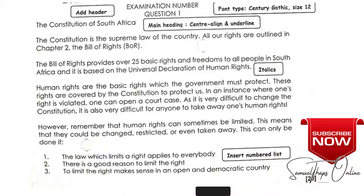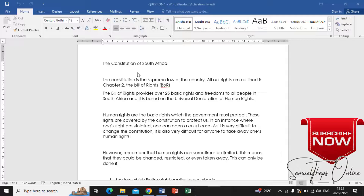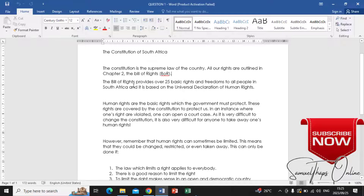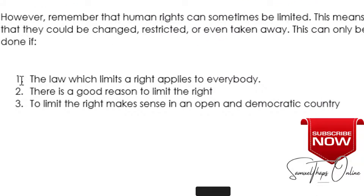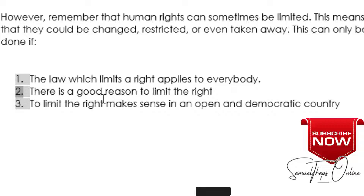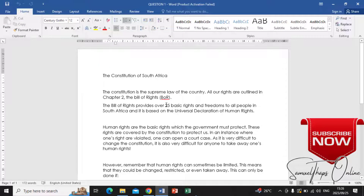We have to create the document exactly as you see it. I'm displaying my document here and you can see it shows all the text that you had to type. At the bottom, these are the numbers — I just pressed 1, full stop, space, then typed the text, and when I press enter, 2 comes automatically, and 3 comes automatically after that.